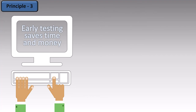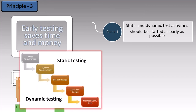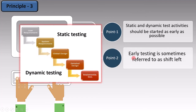Principle 3 states that early testing saves time and money. The first point is that static and dynamic test activities should be started as early as possible. It means that we should start testing as early as possible, whether it is a static test or a dynamic test. Early testing is sometimes referred to as a shift left. Looking at the development cycle, when talking about early testing, we shift to the left on the diagram. The very first stage of testing is at the left-most corner of the software development life cycle. So early testing is sometimes called shift left.